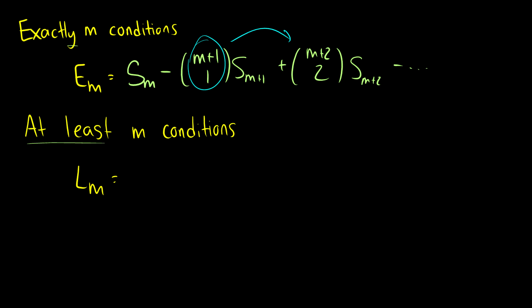At least M conditions are very similar. So we start out with SM, then we subtract M choose one SM plus one. Then we add M plus one choose two SM plus two. And this just goes on and on just like the first one. So it follows the same pattern, except this M here is always one less than the number of conditions we're looking at.